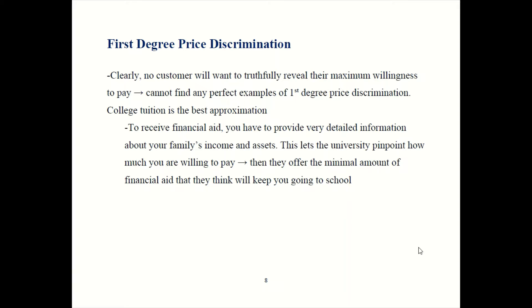The best example that comes close to perfect price discrimination is with college tuition. They give you different amounts of financial aid, and to get the financial aid you have to tell them a lot of personal information about your family's finances — multiple page forms about all sorts of stuff. What they're trying to do is estimate the very most you're willing to pay to go to school, and then offer you the bare minimum financial aid they think you'll accept. Because your preferences aren't directly observed, they can't perfectly price discriminate, but they gather so much information that they can come pretty close.